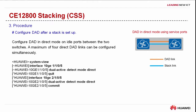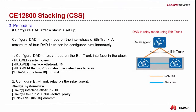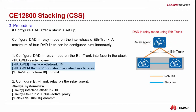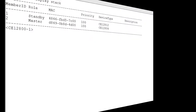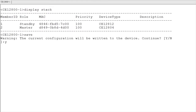Two DAD modes are commonly used: DAD in direct mode and DAD in relay mode. In direct mode, DAD is performed using the dedicated link between the two switches. When configuring the direct mode, connect the two switches and enable DAD on their connected interfaces. In relay mode, DAD is performed using the inter-device aggregation link between the stack and upstream and downstream devices. When configuring the relay mode, enable DAD on the link aggregation interfaces of the stack and enable the relay function on the link aggregation interfaces of the relay agent. Note that the direct mode and relay mode cannot be configured simultaneously in the same stack. After completing the preceding configurations, run the save command immediately to save the stack configuration.